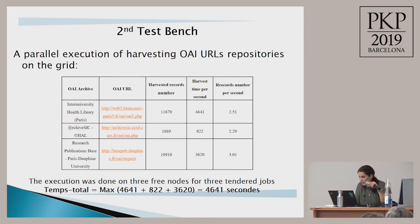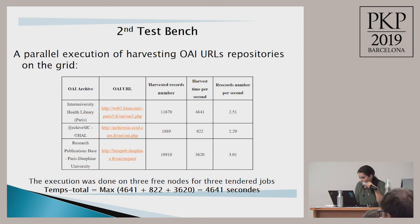In the second test bench, we used the grid to perform a parallel execution of harvesting the same OAI repositories. The execution was done on three free nodes of the grid for three standard jobs. In this case, the total harvest time is the time of the longest harvest.